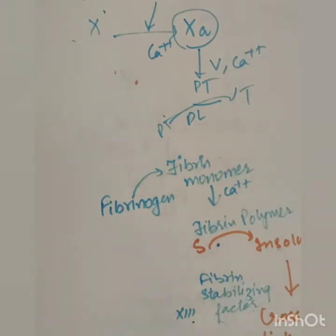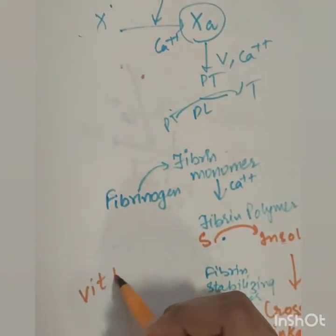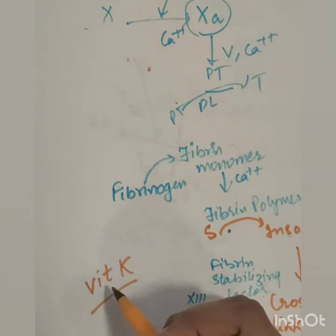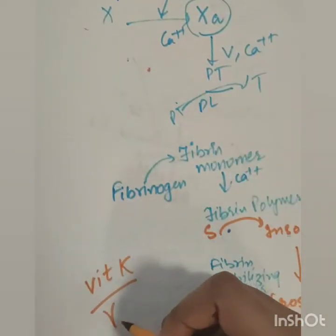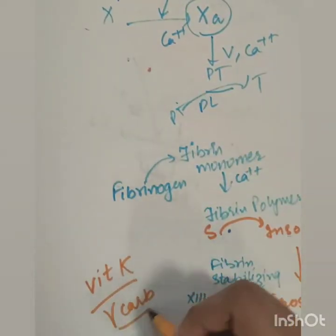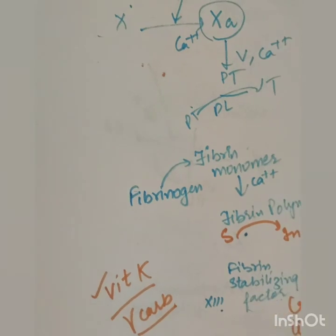And one more thing. These factors, these enzymes, are vitamin K dependent. Because we had to learn what is the clotting factor. It is a coagulating enzyme. These are gamma carboxylation. It is a work to activate the gamma carboxylation. This is also a point. In the amount of vitamin K, it also decreases.